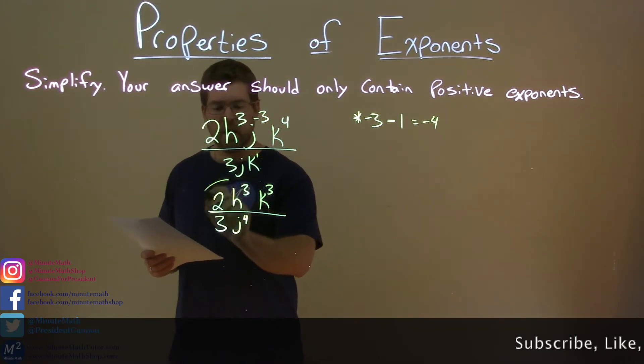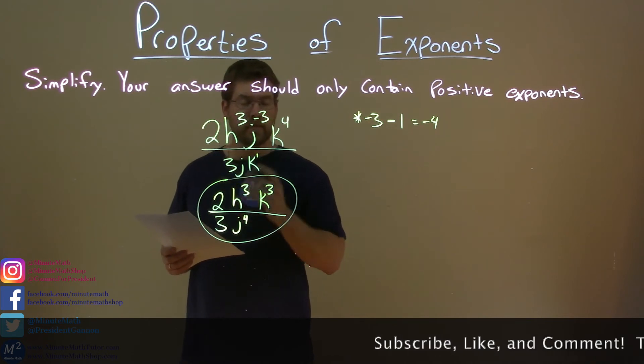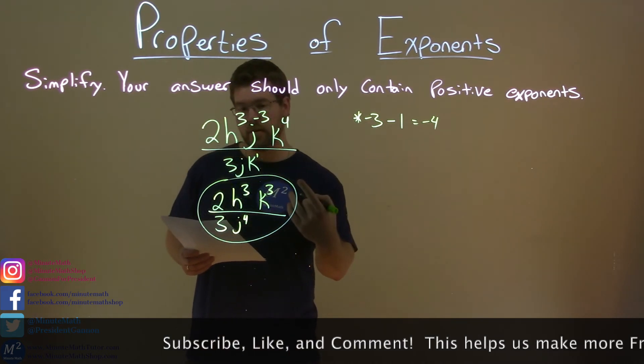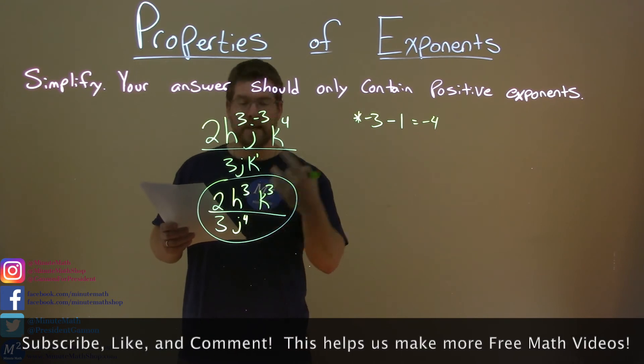Now we're done. Nothing else that we can combine, so our final answer is 2h to the third k to the third over 3j to the fourth power.